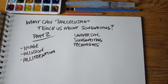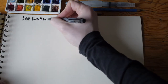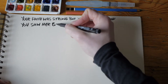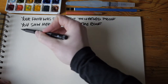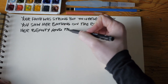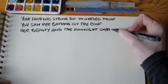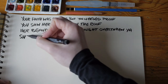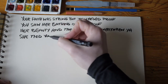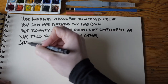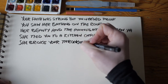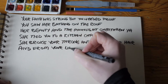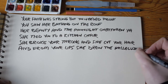Let's take a listen to the first verse. You needed proof, you saw her bathing on the roof. Her beauty and the moonlight overthrew you. She turned you to a kitchen chair. She broke your throne and she cut your hair. And from your lips she drew the hallelujah.